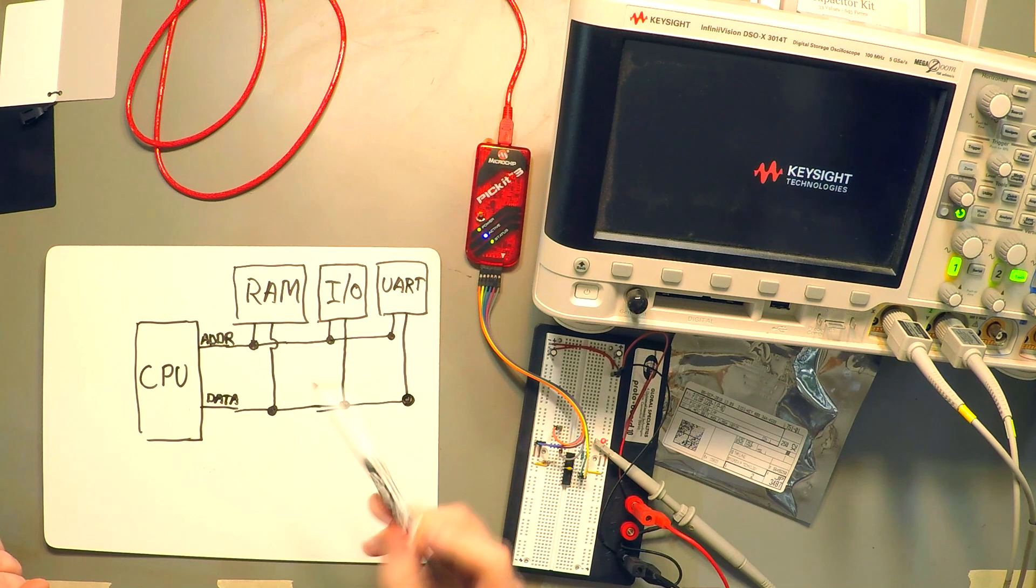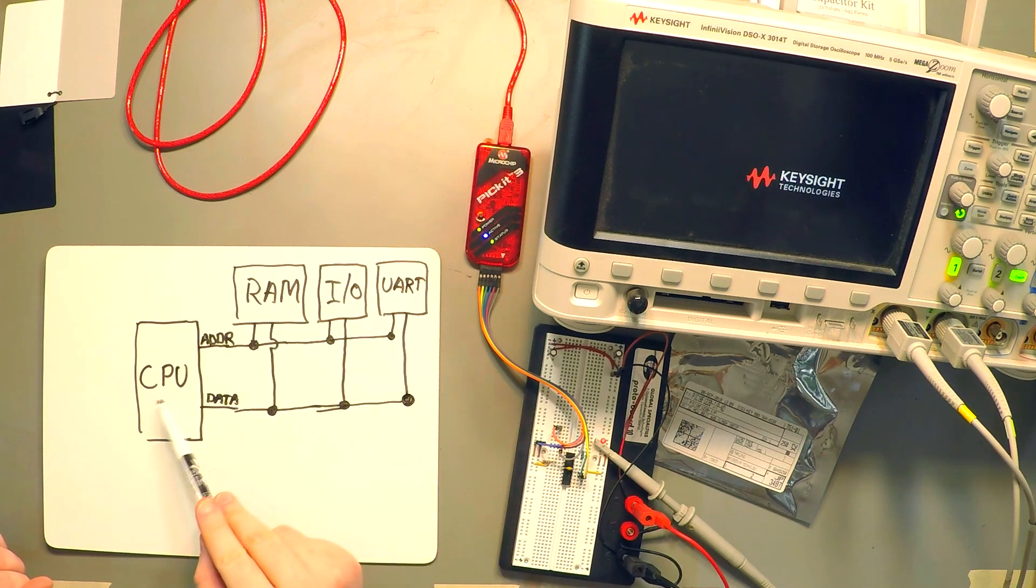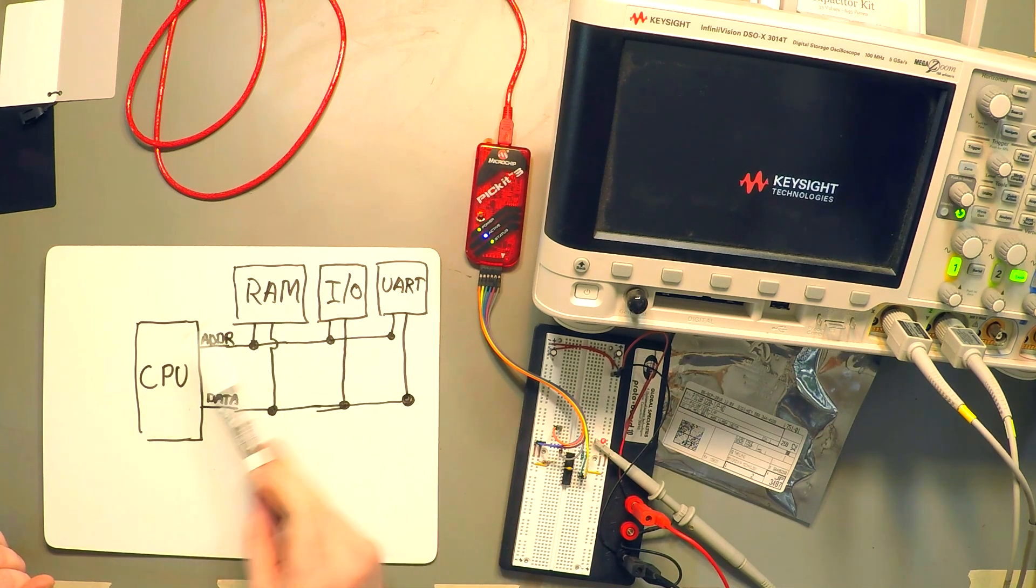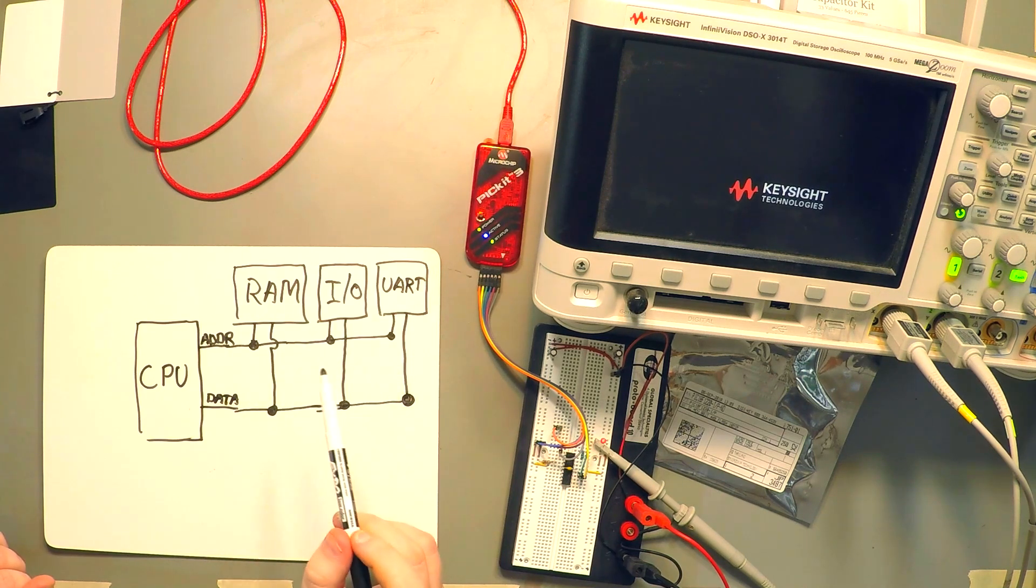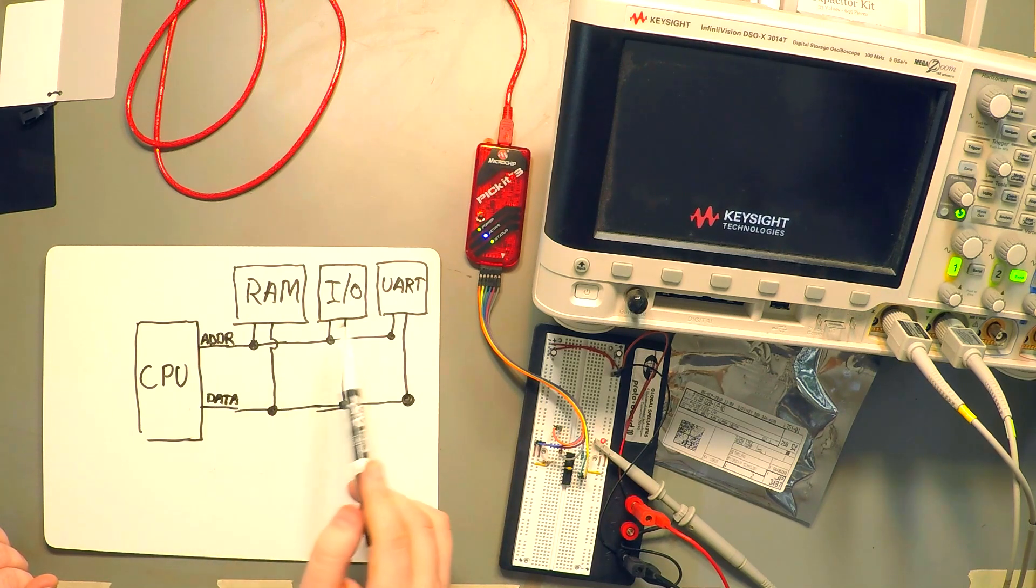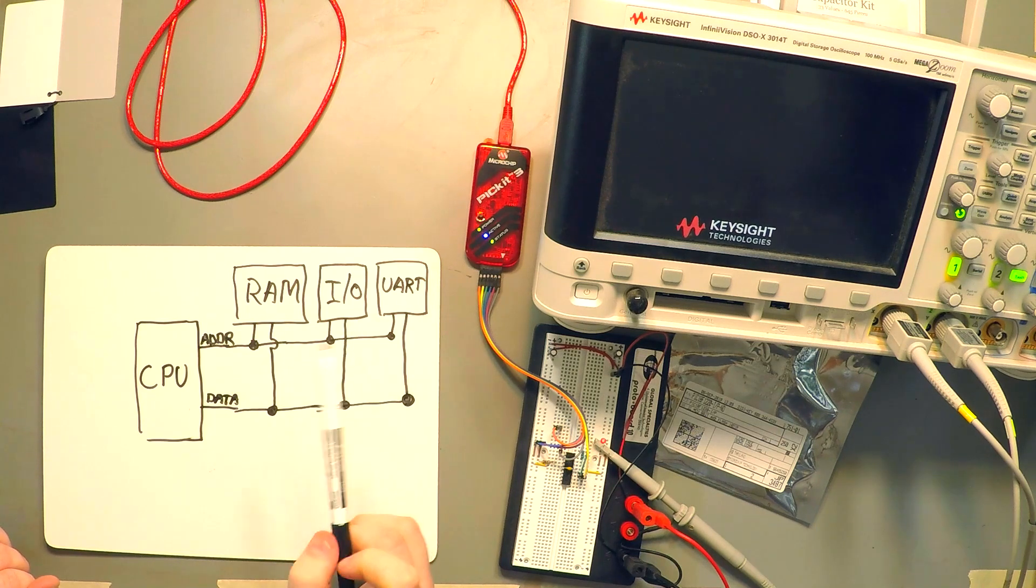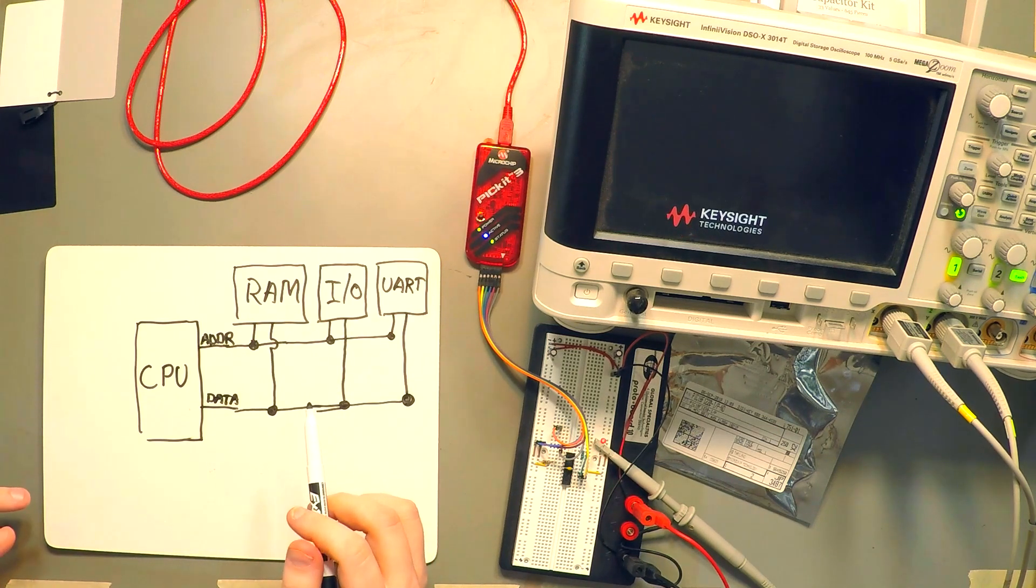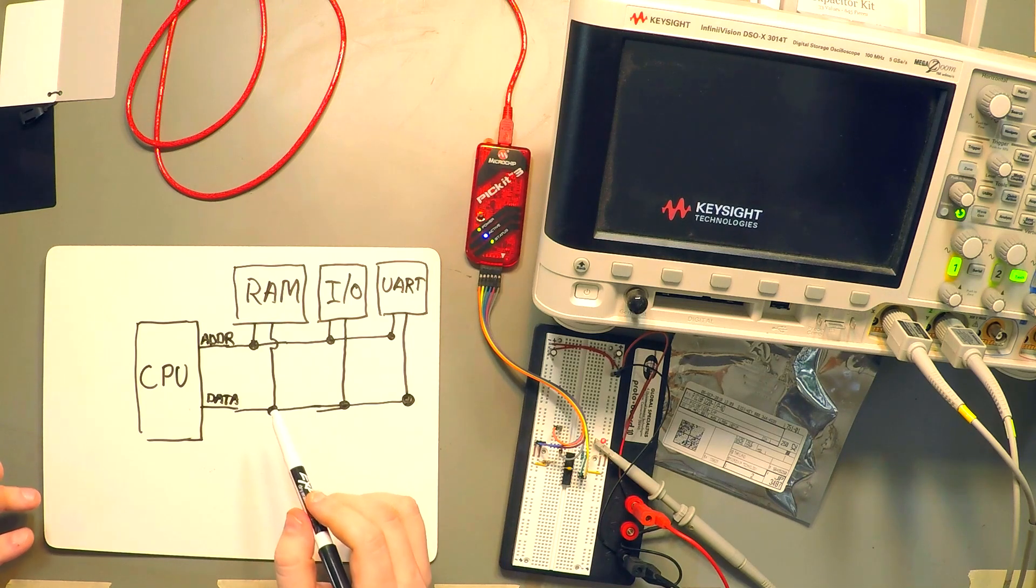Now, from the point of view of the CPU, interacting with any of these peripherals involves some sort of an operation on a data address and then either a read or a write of data to it. So when we interact with anything on the microcontroller, it will be some sort of an operation. And it will look as though we're reading or writing to memory.